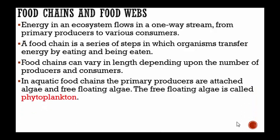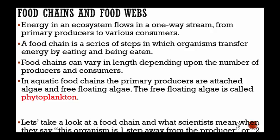In aquatic food chains, the primary producers are attached algae and free-floating algae. The free-floating algae is what we call phytoplankton. They're called phytoplankton because they use photosynthesis — 'phyto' meaning light — they use the sun's light to make their energy through the process of photosynthesis.